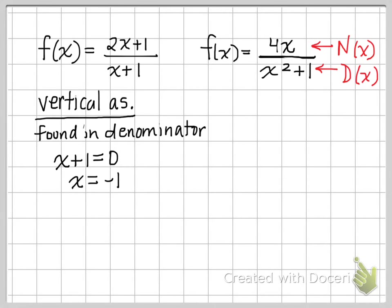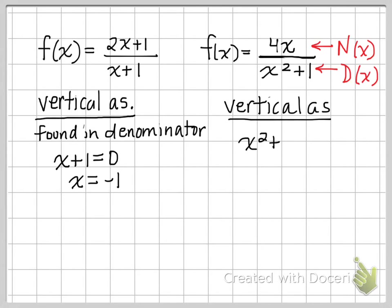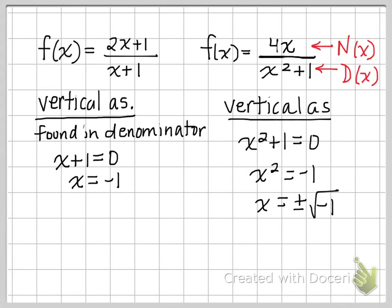For the second function, 4x over x squared plus one, I look for the vertical asymptote by setting x squared plus one equal to zero. That gives x squared equals negative one, which leads to plus or minus the square root of negative one — an imaginary number. So this function actually does not have a vertical asymptote.